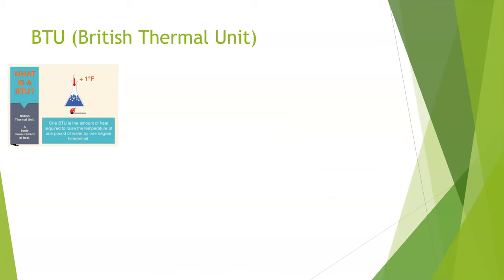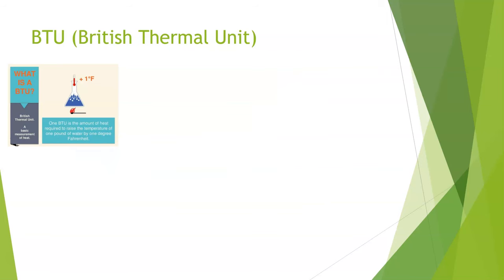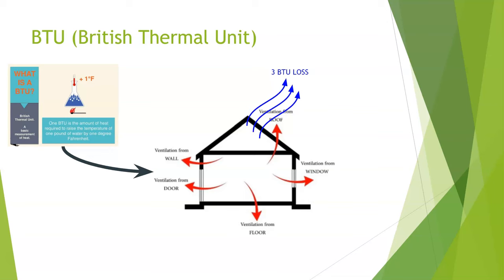Let's take the idea of a British thermal unit and talk about the concept of heat loss. We have a building that's losing heat because heat goes to cold — it's colder outside than it is inside. If we lose 1 BTU of loss, our goal is to neutralize that load and maintain a temperature. So we put 1 matchstick in, because 1 matchstick is equivalent to about 1 BTU, and we've neutralized our load. If we lose 3 BTUs, we just need to put 3 BTUs in to neutralize that load. This drives home the neutralization effort when it comes to heat loss.